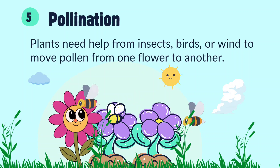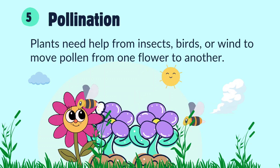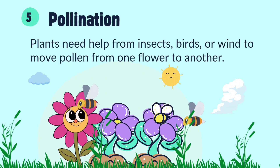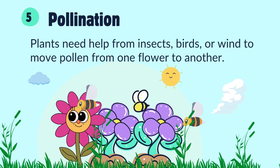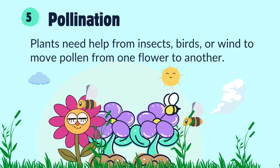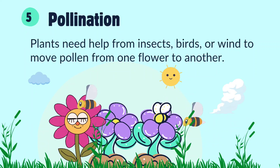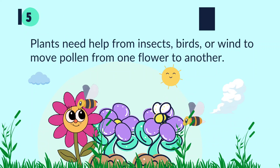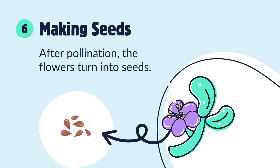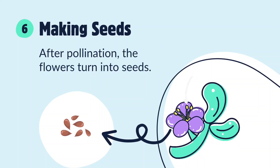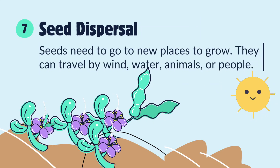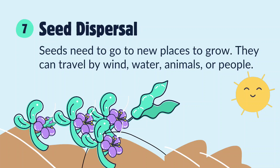After some more time, beautiful flowers start to bloom on the plant. These flowers are very important — they help make fruits and seeds. Once the flowers are fully grown, they turn into fruits. Inside the fruits, there are new seeds. And guess what? Those seeds can grow into new plants.